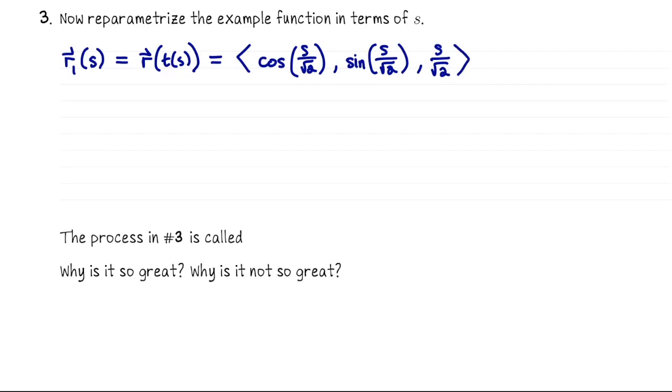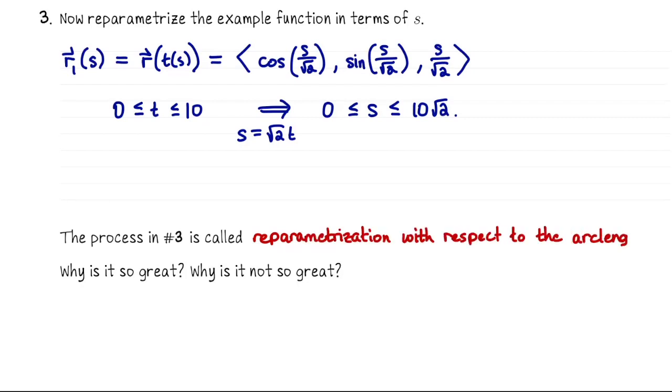We found the components for the reparametrization, but we also have to adjust the time. Our original time range was from 0 to 10, but that was for t. If s is square root of 2t, then that means that when t is 0, s is 0, and when t is 10, s is 10 square root of 2. So we've adjusted the components, and we also had to adjust the time interval so that we trace out exactly the same curve. So ultimately what we've done is reparametrize with respect to the arc length parameter s.